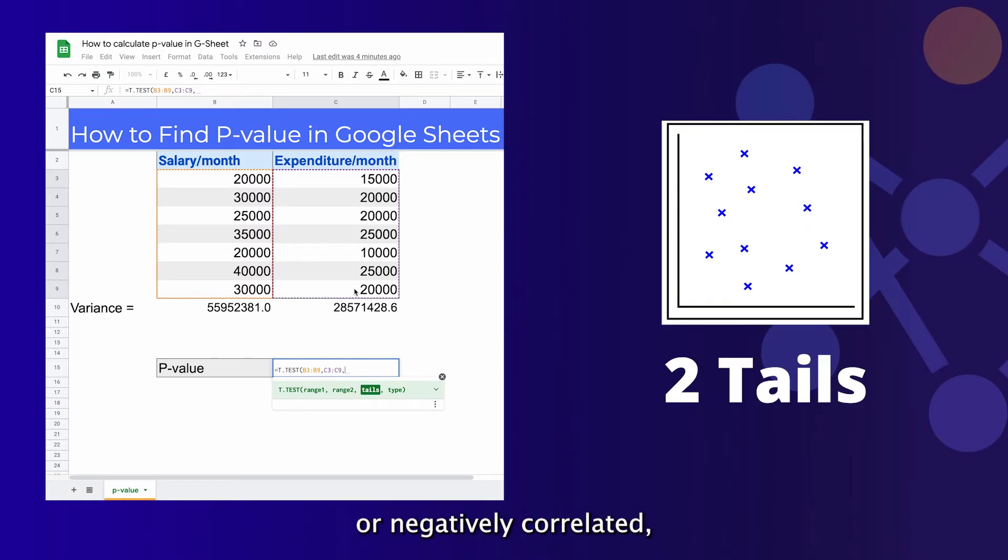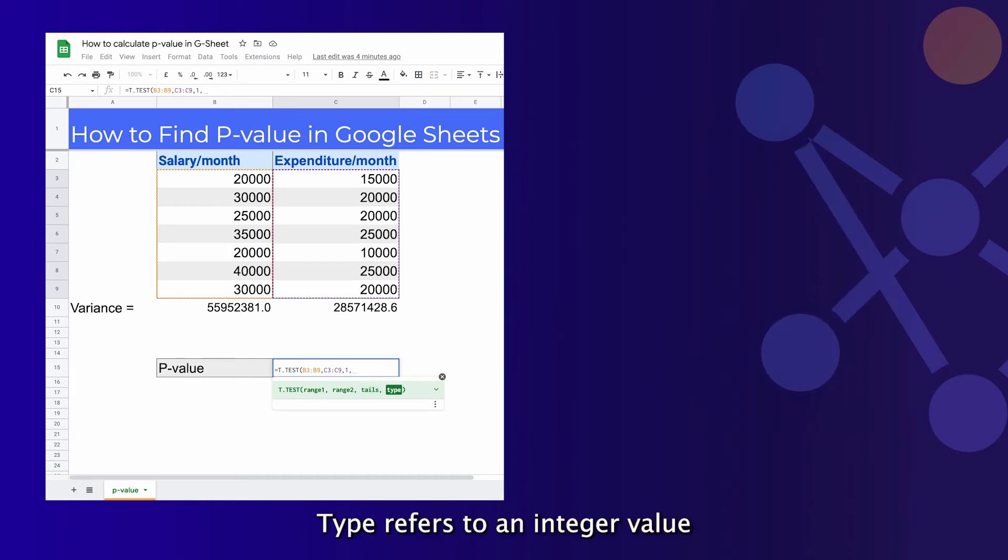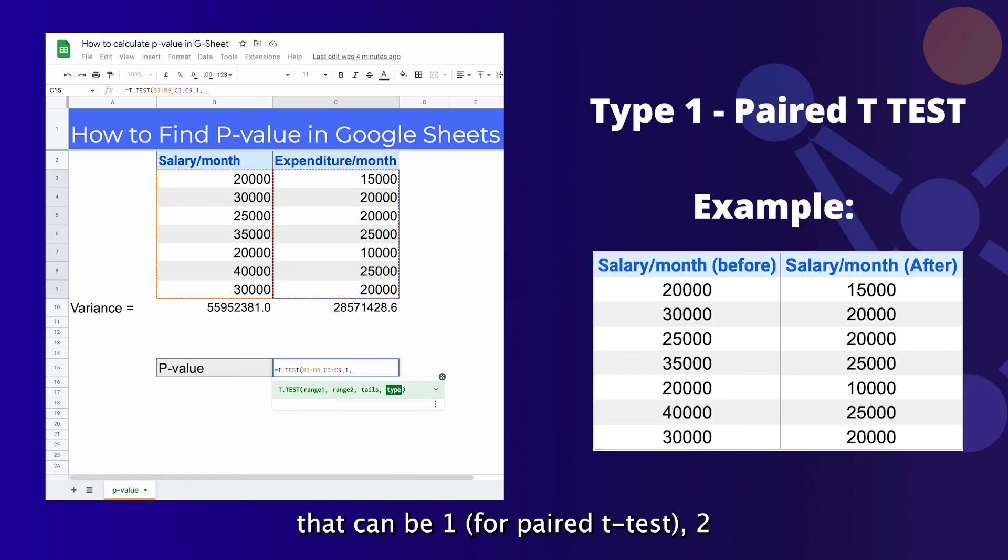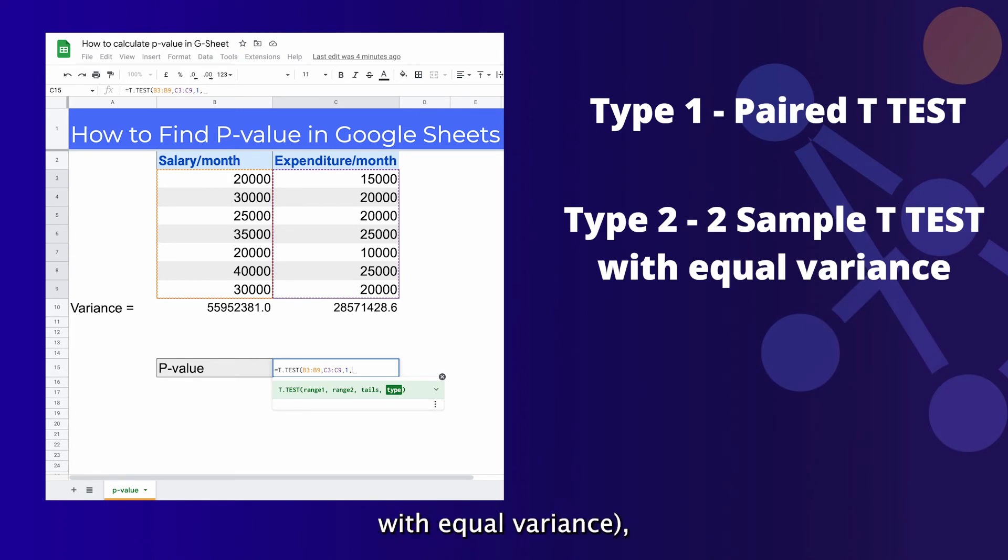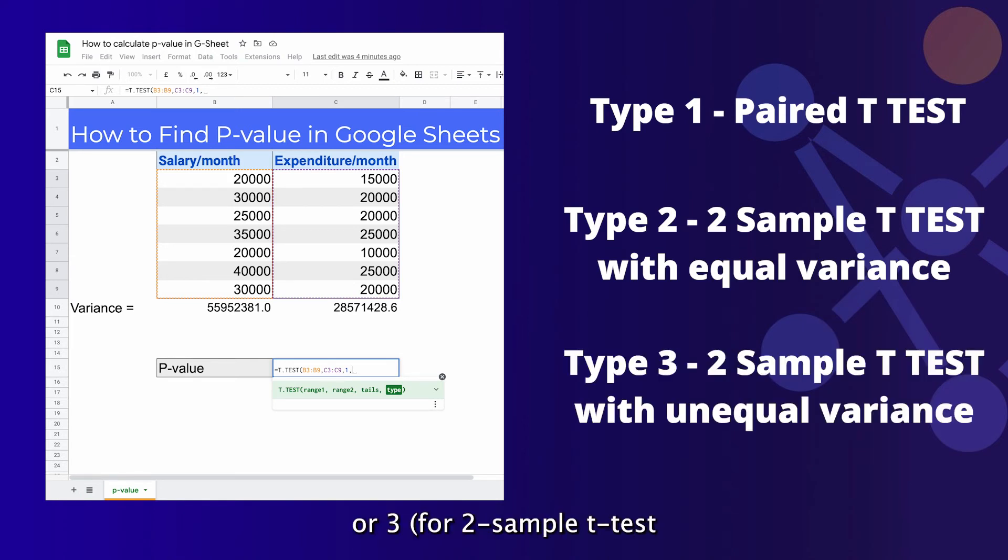Next, type refers to an integer value that can be one for paired t-test, two for two sample t-test with equal variance, or three for two sample t-test with unequal variance.